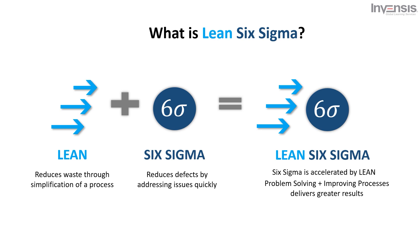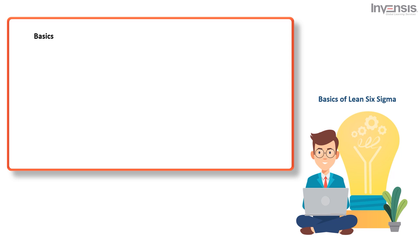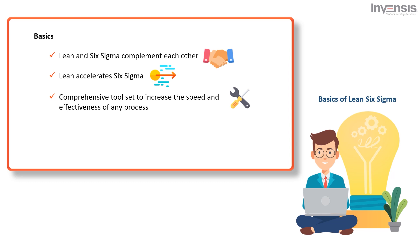Lean Six Sigma combines both Lean and Six Sigma to utilize the concepts from both processes. It is a process improvement methodology designed to eliminate problems, remove waste and inefficiency, and improve working conditions to provide a better response to customers' needs. It combines the tools, methods, and principles of Lean and Six Sigma into one powerful methodology for improving your organization's operations. The two methods complement each other, working together to identify errors and waste more efficiently than using just one method. Lean accelerates Six Sigma.